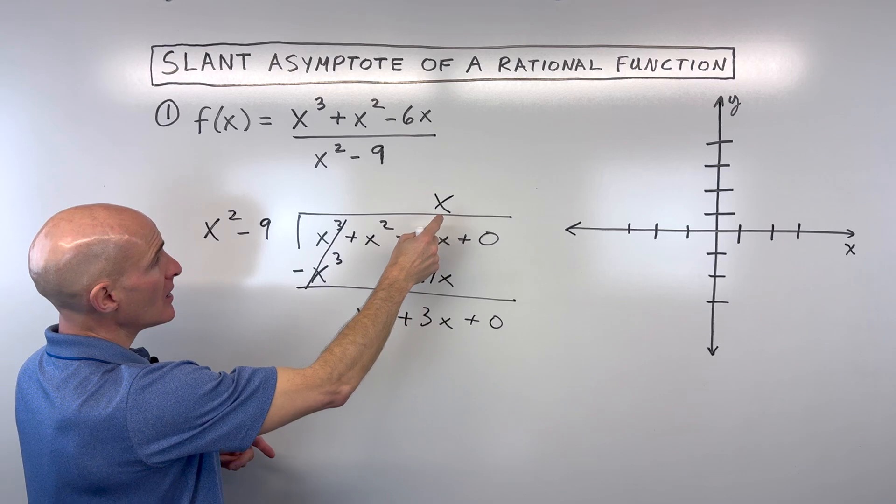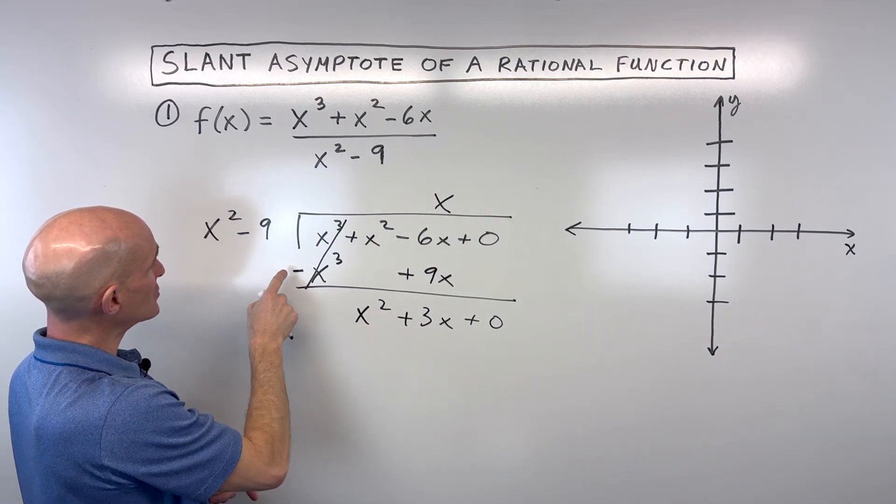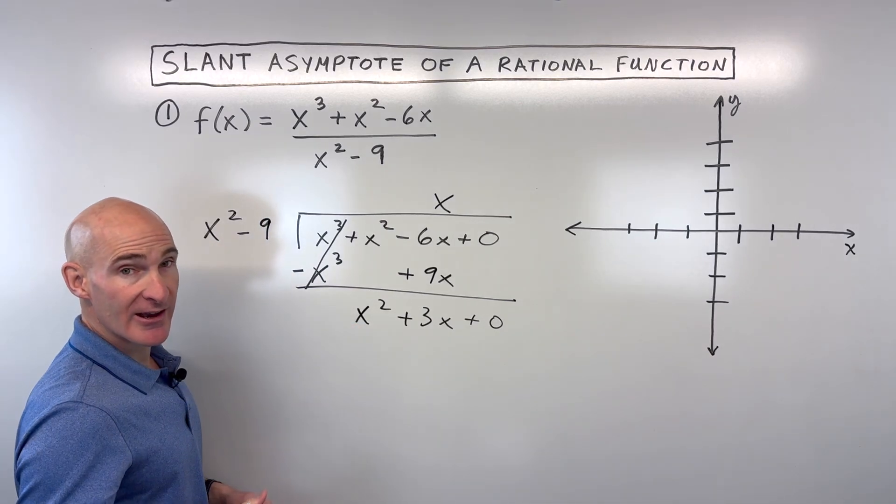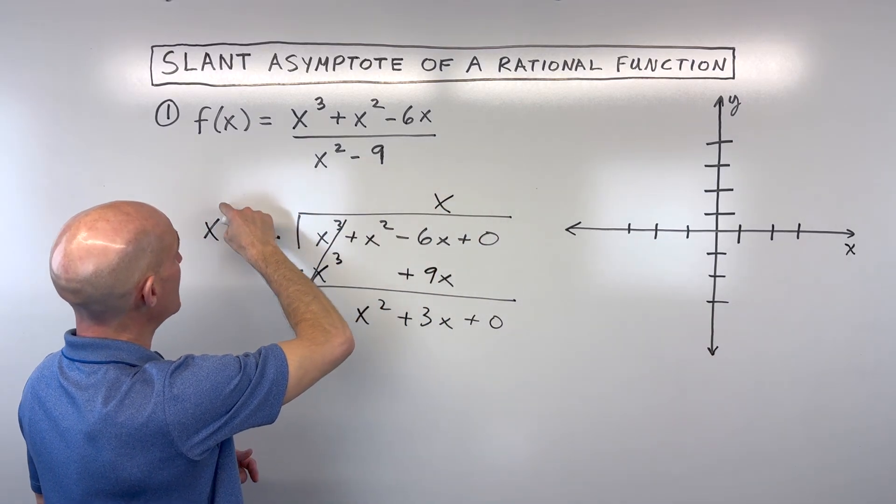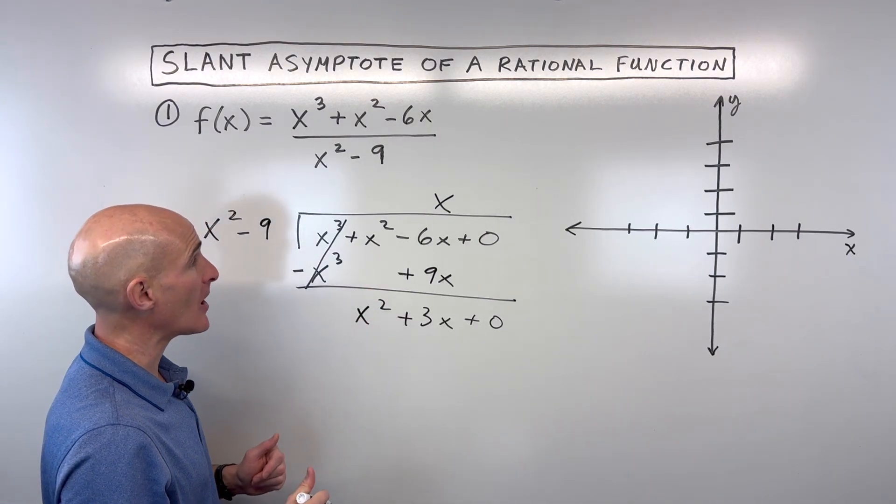So now same idea. We can say what times x squared equals x squared? Or what's x squared divided by x squared? Or how many times does x squared go into x squared? But again, I like to say what times this first term equals this first term so that when we subtract, that first term cancels out.